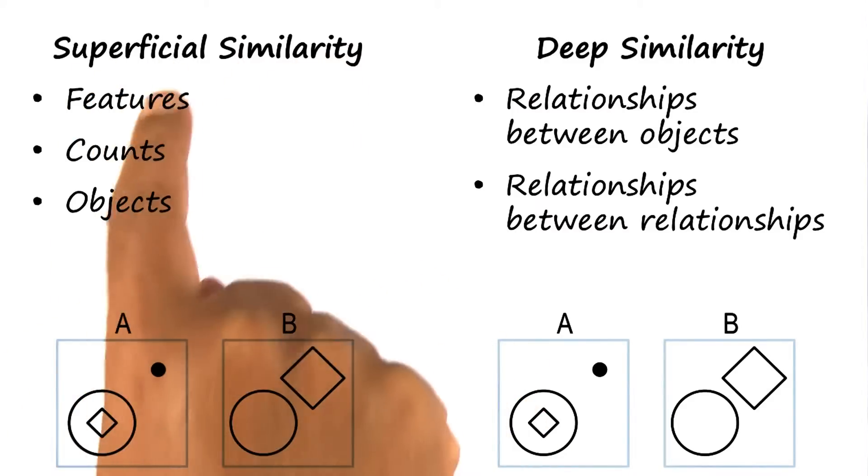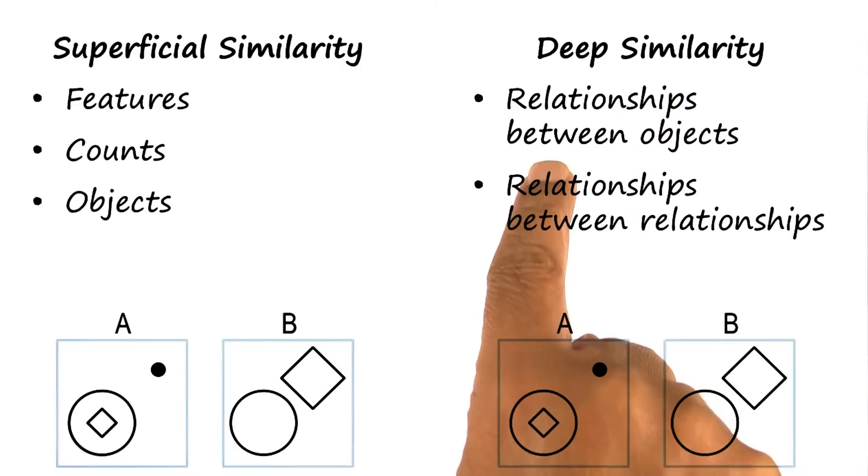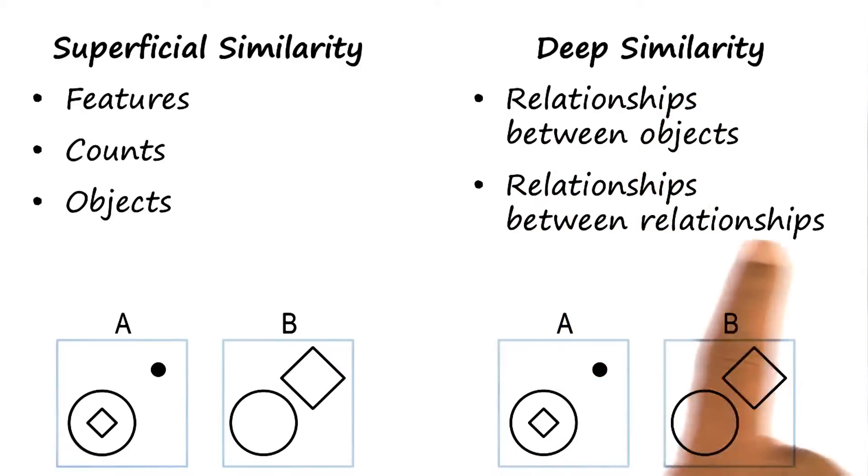Superficial similarity deals with features of objects, counts of objects, or objects themselves. Deep similarity deals with relationships between objects, or sometimes relationships between relationships.